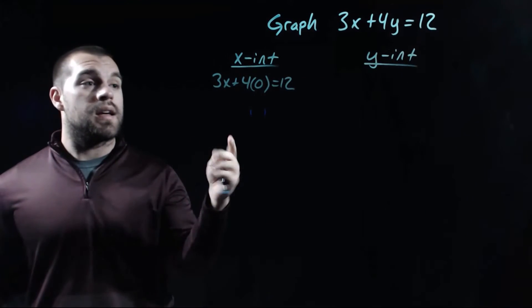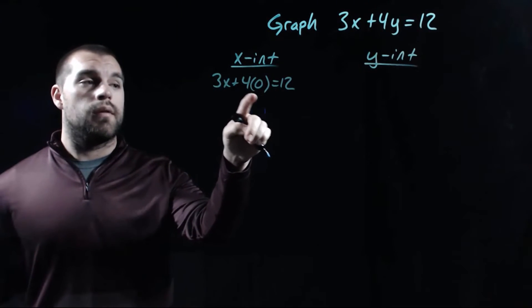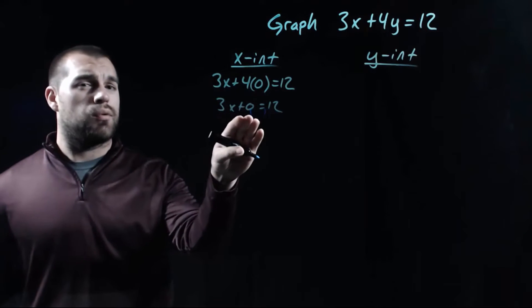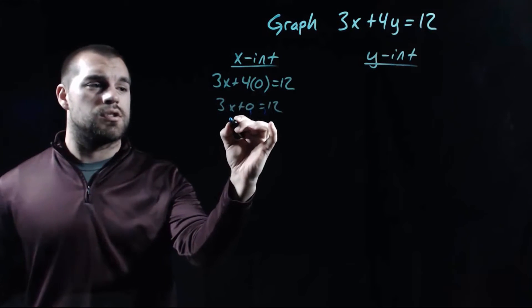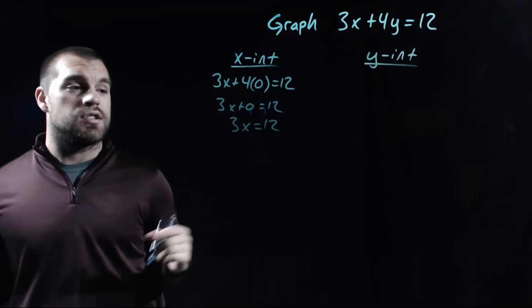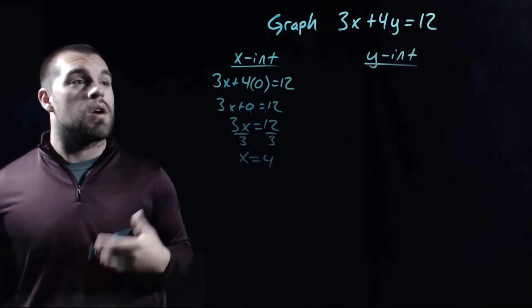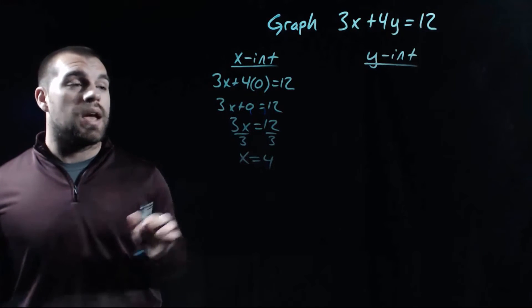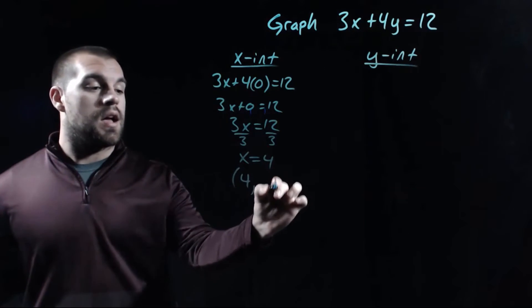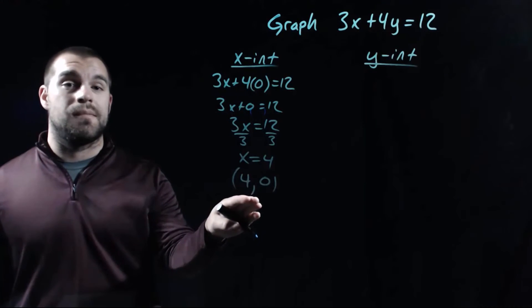So when we plug in that zero for our y, we get 3x plus 4 times zero equals 12. Well, 4 times zero is just zero. And if we take 3x and add zero to it, it's still just 3x. Now, if we want to solve this to get x all by itself, we would divide each side by 3. So we get x equals 4 as our x-intercept. Now, we can write this as an ordered pair. The x value is 4 and the y value is the zero that we plugged in at the beginning. So this is the point (4, 0).